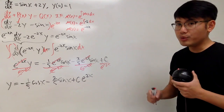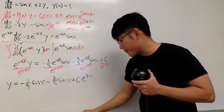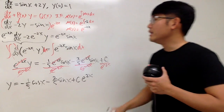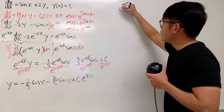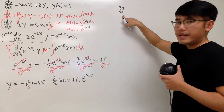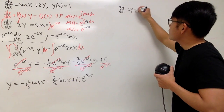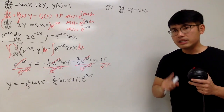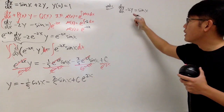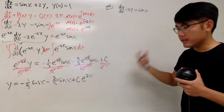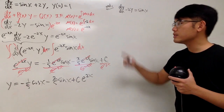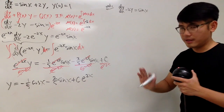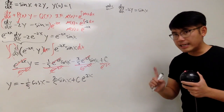Now I'll show the second way to do this. We look at the same differential equation: dy/dx minus 2y equals sin x. This method only works if we have a linear differential equation, meaning y and the derivatives of y have to be linear — y to the first power, dy/dx to the first power. We cannot put y inside of a sine or cosine — none of that.